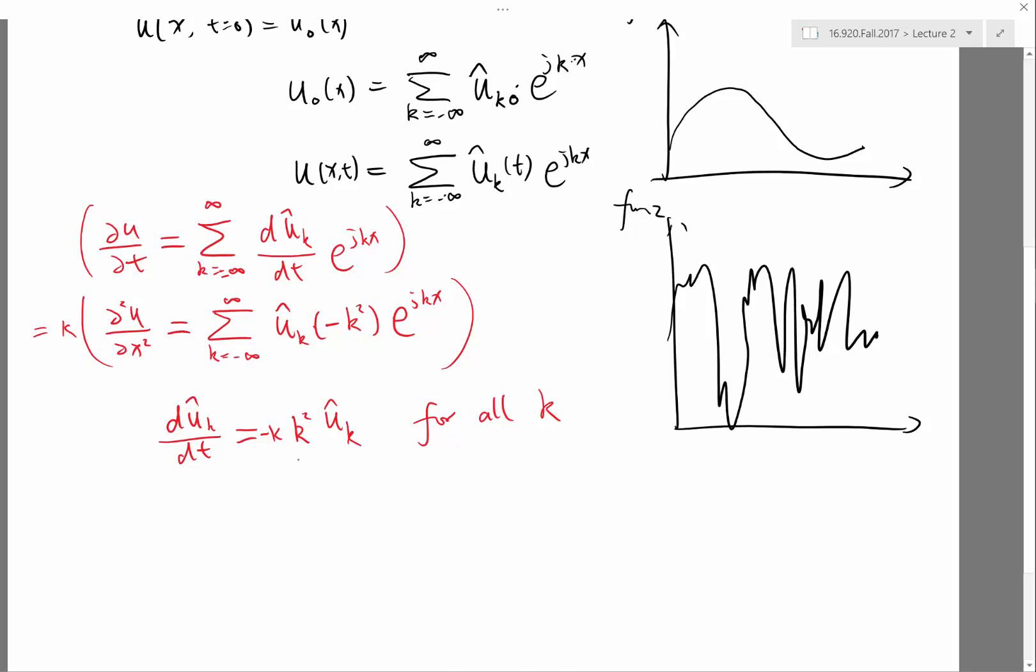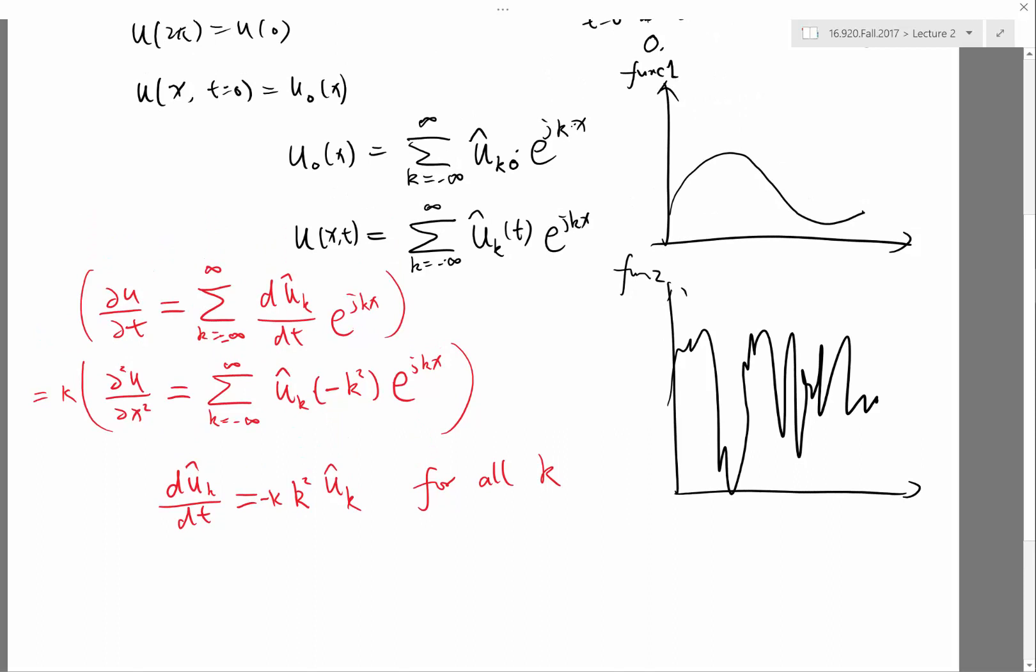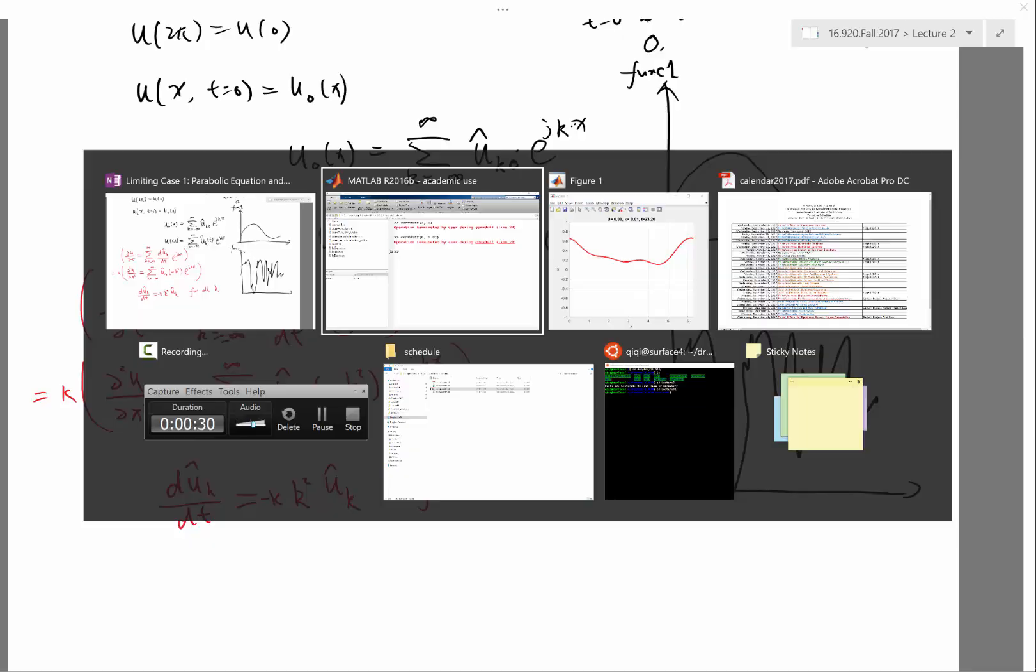Second thing is the different k's decay at different rates. So what k would decay faster? What k would decay slower? Large k decays faster. Large k decays way faster, way faster than small k's. It's square, right? Not linear. So if I have function 2 as my initial condition, all these wiggles are going to be gone pretty quickly, because these terms decay pretty quickly.